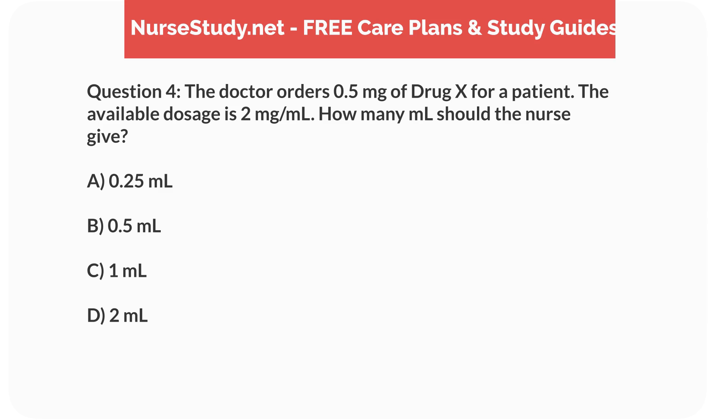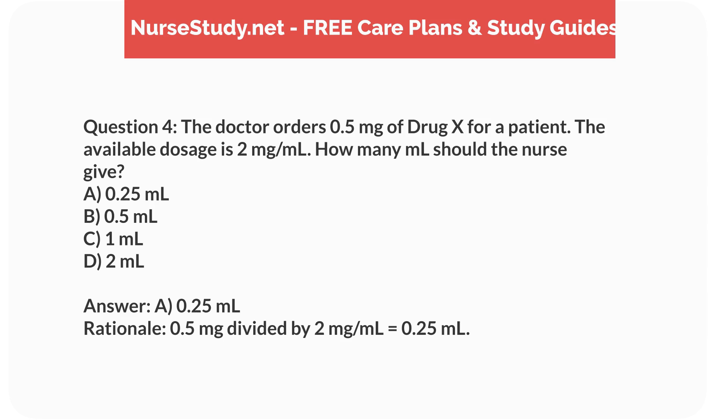Question 4. The doctor orders 0.5mg for a patient. The available dosage is 2mg per mL. How many mL should the nurse give? a. 0.25mL, b. 0.5mL, c. 1mL, d. 2mL. Answer: a. 0.25mL. Rationale: 0.5mg divided by 2mg per mL equals 0.25mL.